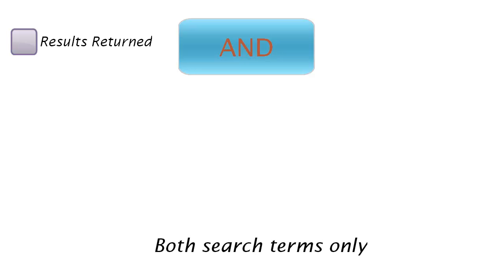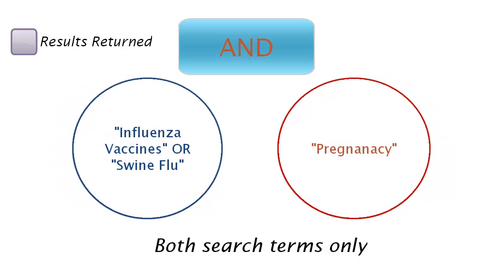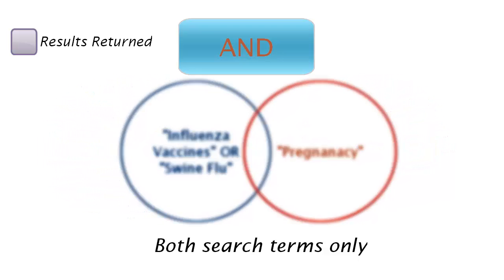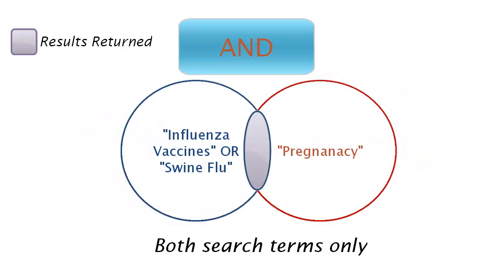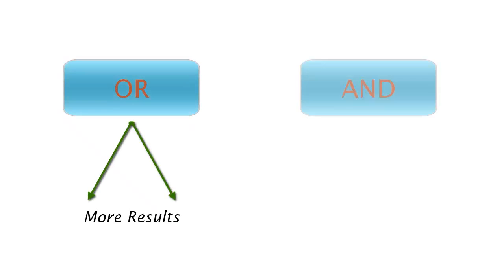Combine using AND when you want to bring together two distinct concepts and only find articles in which both terms appear. For example, we might be interested in articles dealing with flu shots AND pregnancy. Effective use of the AND and OR operators will greatly improve your search skills. Just remember, combining using OR will broaden your search results, while combining using AND will narrow them.